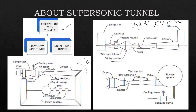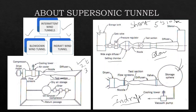Let us review two types: the blowdown tunnel and the in-draft wind tunnel. The major difference between them is that in blowdown, the process carries fluid from high pressure to low pressure using a high-pressure storage tank. In the in-draft tunnel, fluid also moves from high pressure to low pressure, but instead a low-pressure vacuum chamber is used for storage. So blowdown runs with a high-pressure storage tank, while in-draft runs with a vacuum pressure tank.